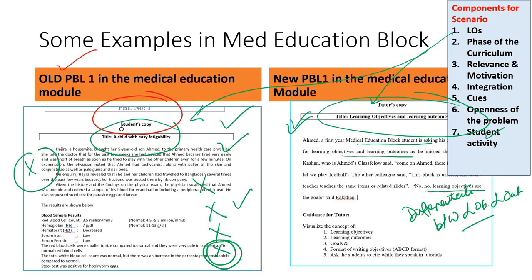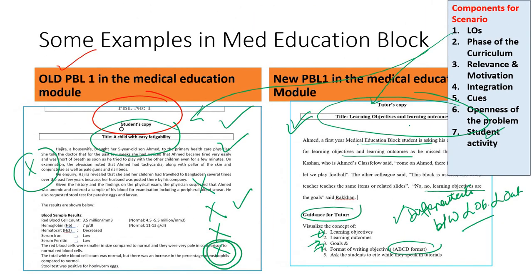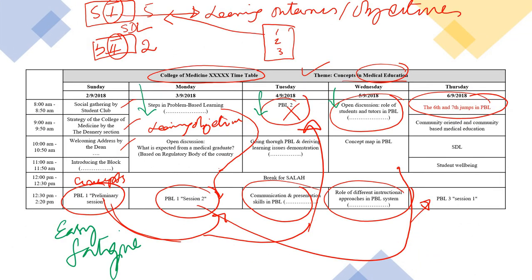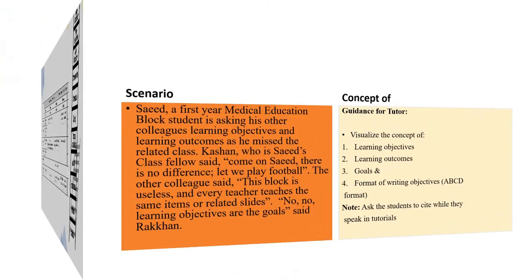In the new scenario, students are mixing up learning outcomes with learning objectives. Once the student solves this problem — guided by the tutor guide — they will focus on differentiating learning objective, learning outcome, and learning goal, and write them in ABCD format. This new scenario is relevant, it will motivate students by synergizing with the teacher's lecture, it promotes student activity, and it is correlated with the weekly theme and timetable. Every topic should be correlated so that everything harmonizes well.